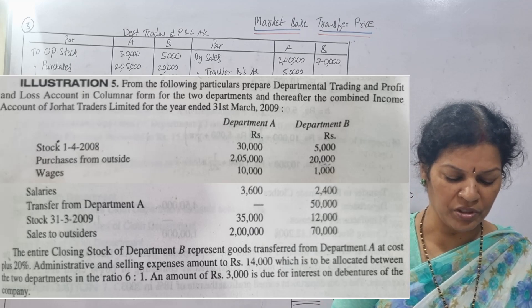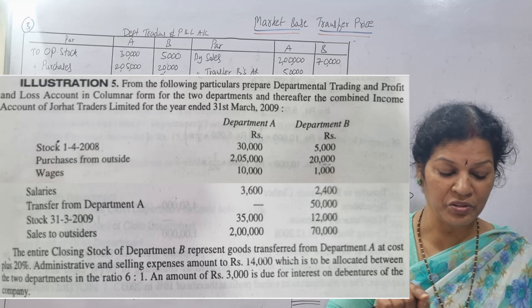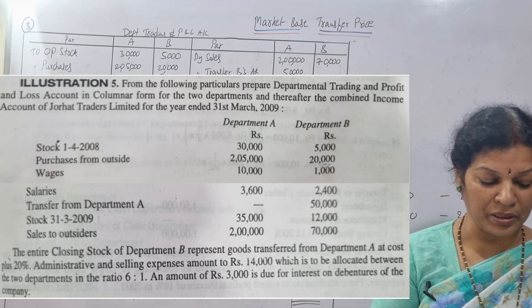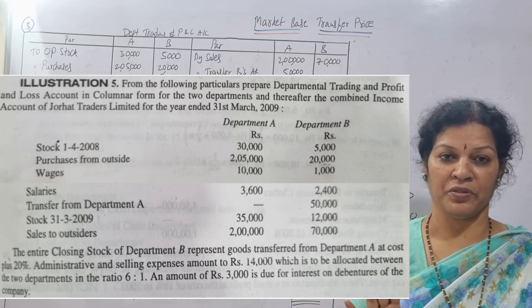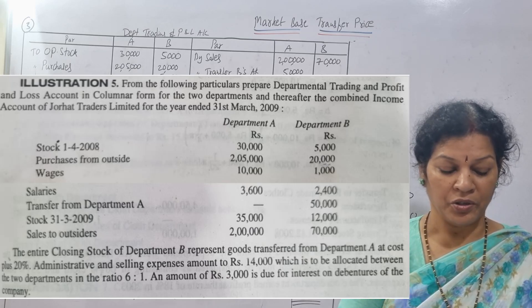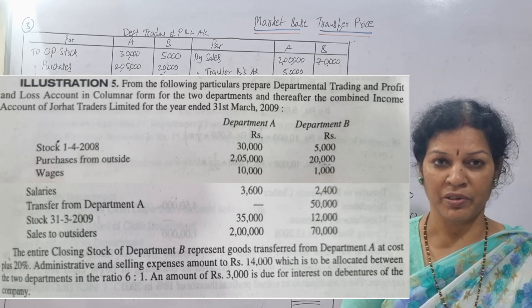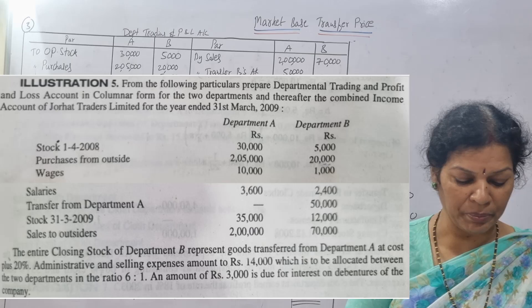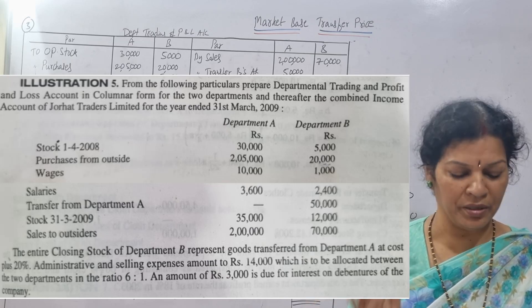Now coming to the adjustments. The entire closing stock of Department B represents goods transferred from Department A at cost plus 20%. The entire closing stock of Department B is 12,000. This is transferred from Department A at cost plus 20% — cost is 100 plus 20%, which comes to 120. Administrative and selling expenses amount to 14,000, which is to be allocated between the two departments in the ratio of 6 to 1. We'll divide it and give it to Department A and B accordingly.